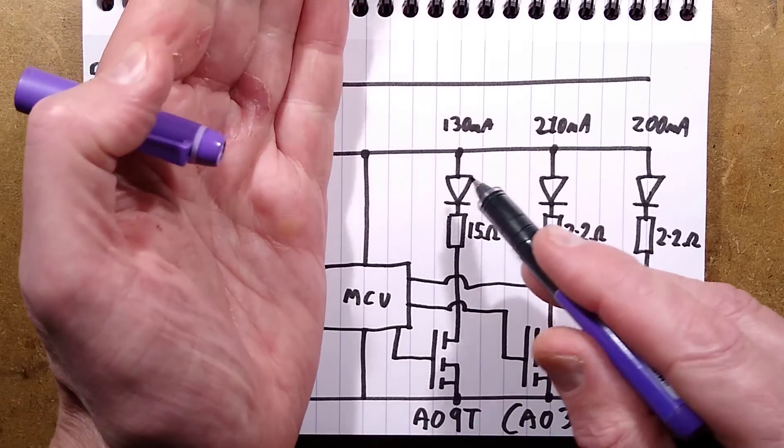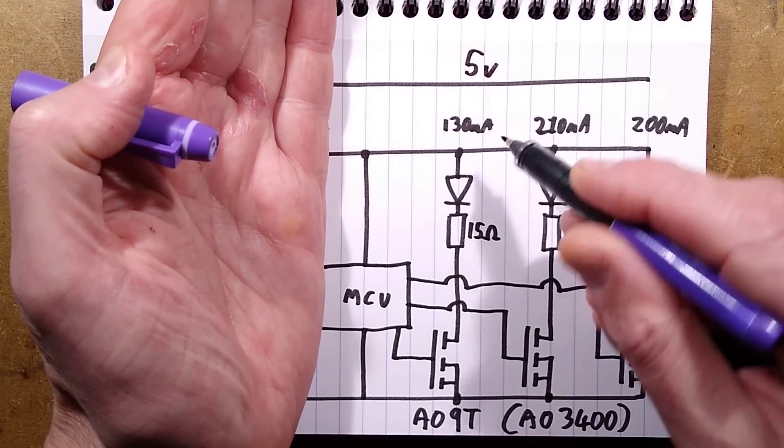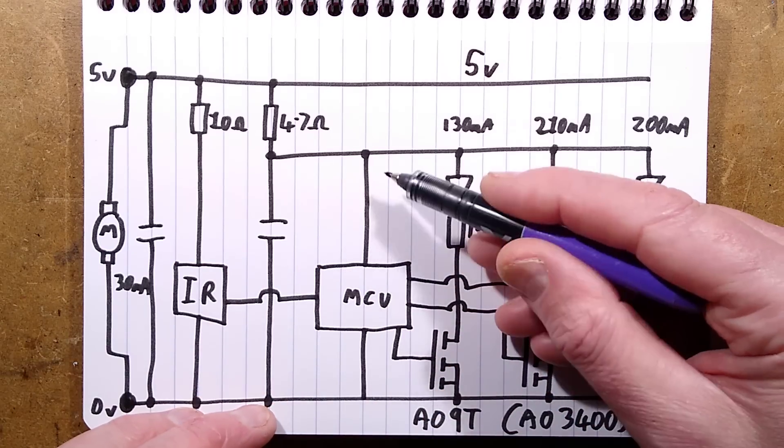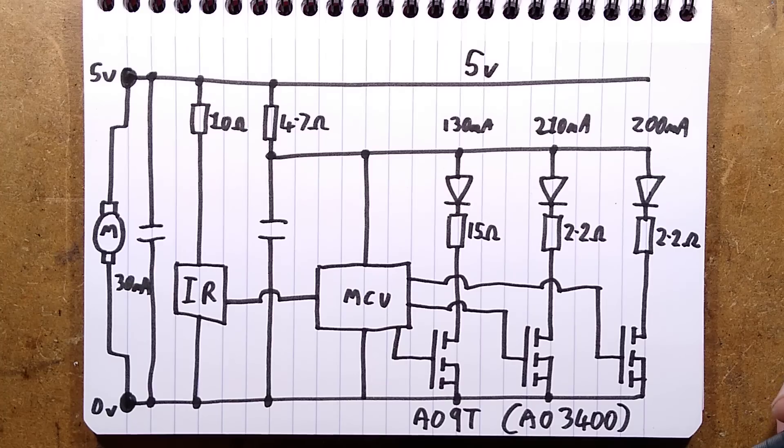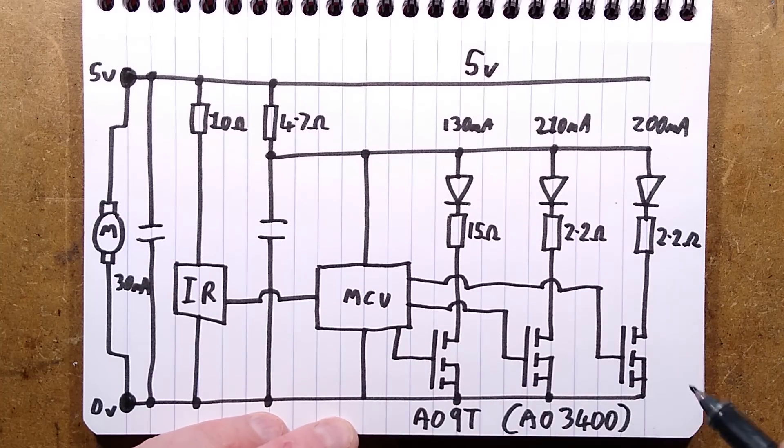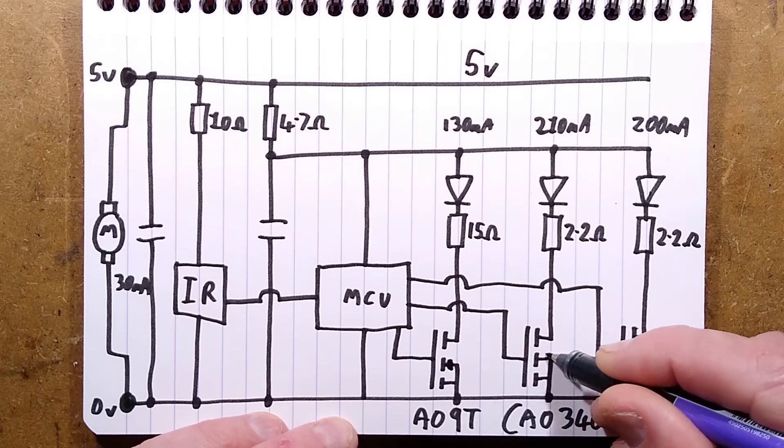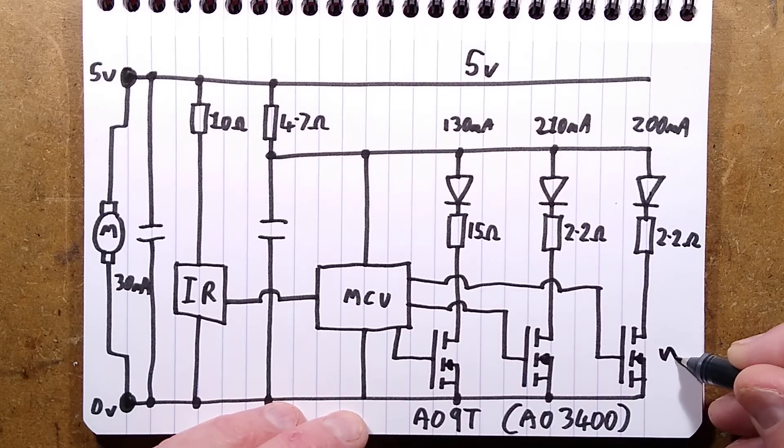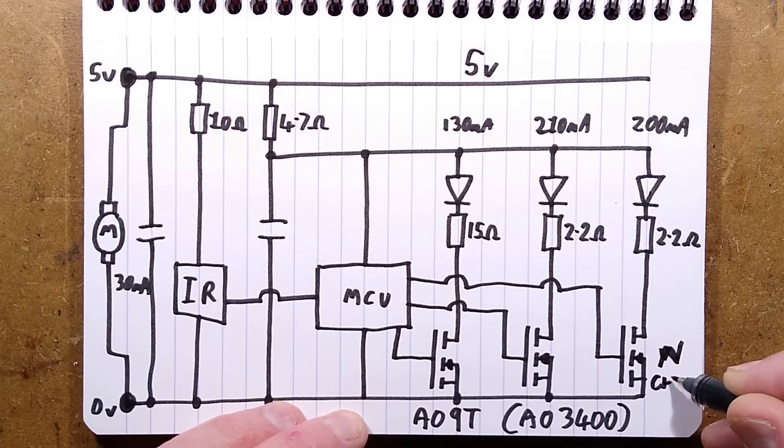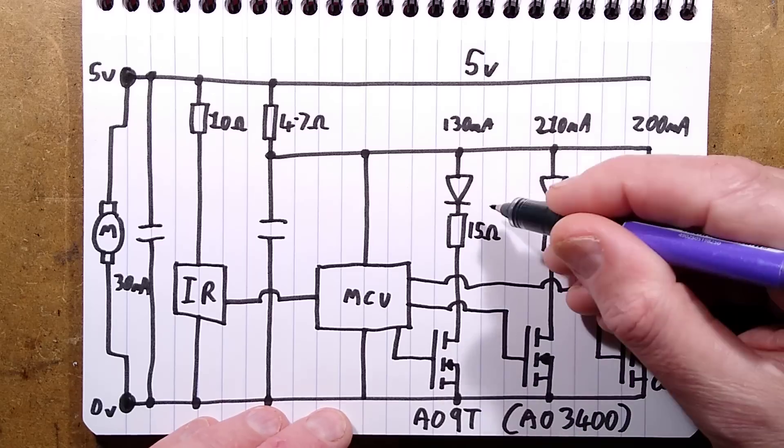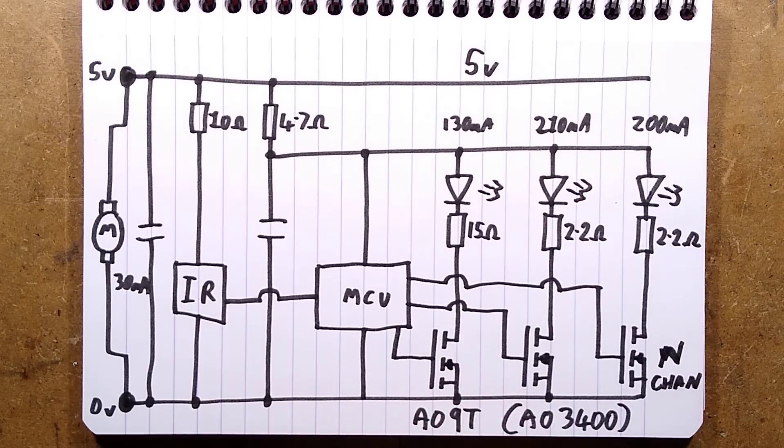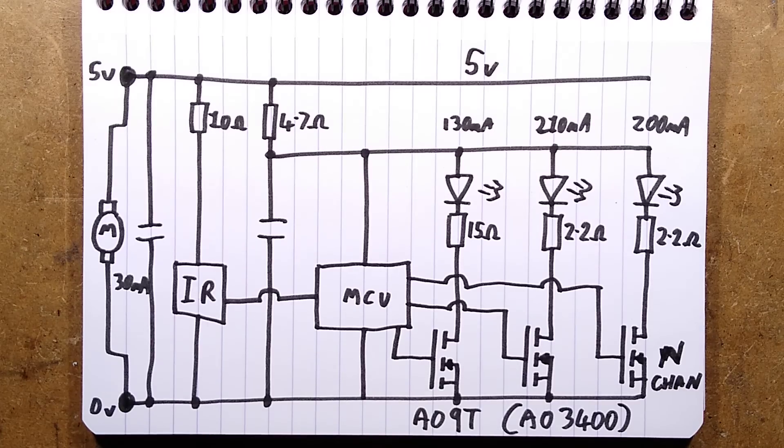Unfortunately, instead of taking the LEDs up to the 5 volt rail, they actually took it onto that microcontroller rail, which means that depending which LEDs are lit, it varies between about 3 and 5 volts. And the microcontroller then drives MOSFETs. I've not drawn the little arrows on, I shall draw the little arrows on right now. AO3400, otherwise known as AO3400, N-channel MOSFETs.